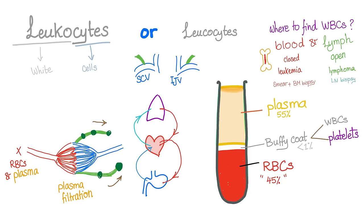Leukemia will be found in the bone marrow and in the blood smear, so to diagnose it you get a peripheral smear and a bone marrow biopsy. To diagnose lymphoma, you need a lymph node biopsy. Leukemia is in the bone marrow and in the bloodstream; lymphoma is in the lymph nodes. Understand the basics first before diving into subtypes like acute lymphocytic leukemia versus non-Burkitt's lymphoma.